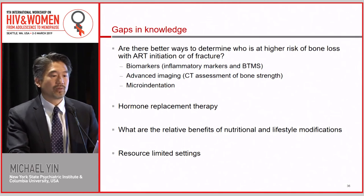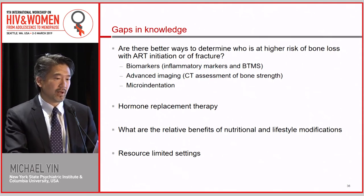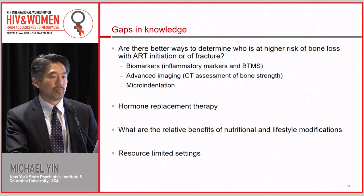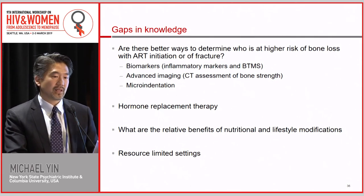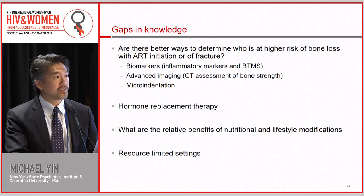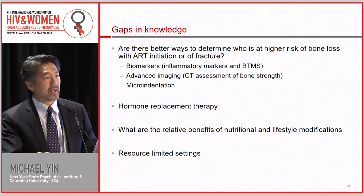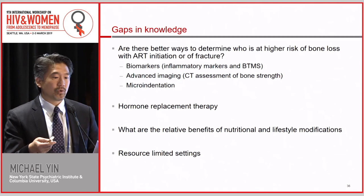Gaps in knowledge: Are there better ways to determine who's at higher risk of bone loss with ART initiation or fracture? We've investigated biomarkers, advanced imaging, and a probe of bone strength called OsteoProbe. Hormone replacement therapy is something we should give more thought to. Determining relative benefits of nutritional and lifestyle modifications, especially in younger individuals, and understanding how to conduct research in resource-limited settings are also important. I have data on using portable ultrasounds in resource-limited settings that I'm happy to share.